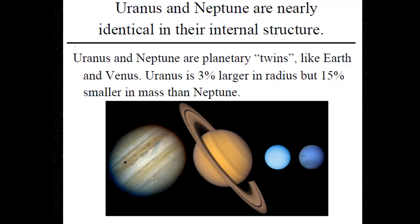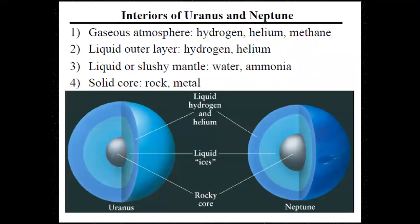Uranus and Neptune are nearly identical in their internal structure as well as size. Uranus and Neptune are planetary twins like Earth and Venus. Uranus is 3% larger in radius but 15% smaller in mass than Neptune. These 3% is not a big deal, it's quite similar. The interior of Uranus and Neptune is kind of the same again.